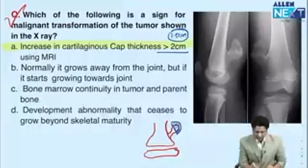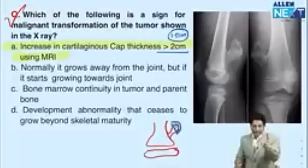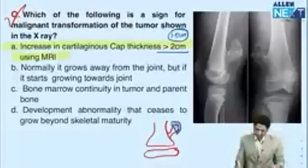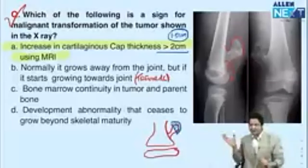Option: grows toward the joint — Trevor disease, not malignancy. Bone marrow continuity between the lesion and parent bone is a normal finding of osteochondroma. Osteochondroma was previously considered a developmental abnormality but is now classified as a true benign tumor. It ceases growth after skeletal maturity. Osteochondroma-related questions are commonly asked. The key malignancy indicator remains cartilaginous cap thickness beyond 1.5 cm.